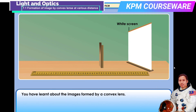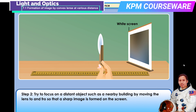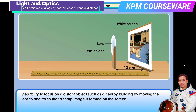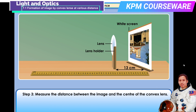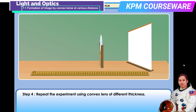You have learned about the images formed by a convex lens. To measure the focal length of a convex lens, follow these steps. Step 1: Place a convex lens on a lens stand and place a white screen behind the lens. Step 2: Try to focus on a distant object such as a nearby building by moving the lens to and fro so that a sharp image is formed on the screen. Step 3: Measure the distance between the image and the center of the convex lens. Step 4: Repeat the experiment using convex lenses of different thickness.